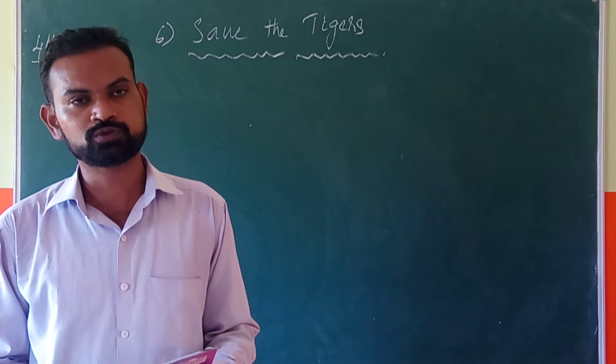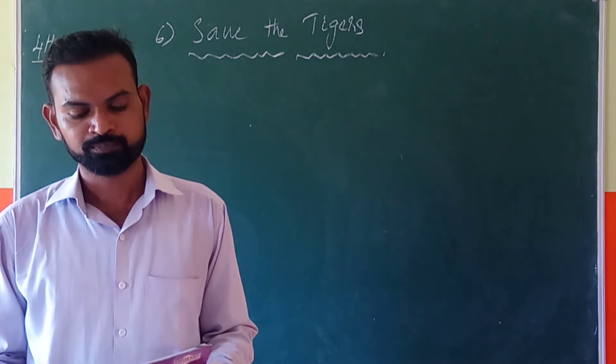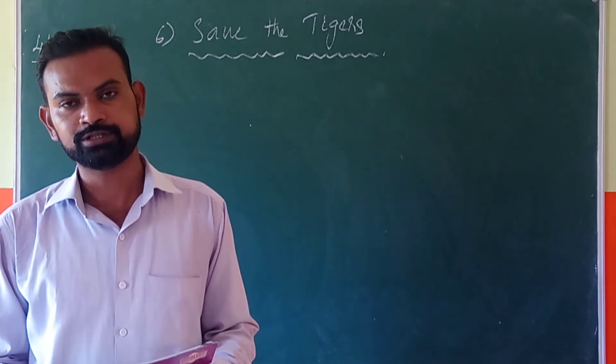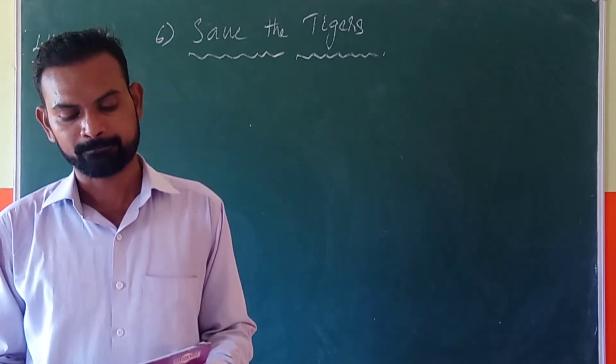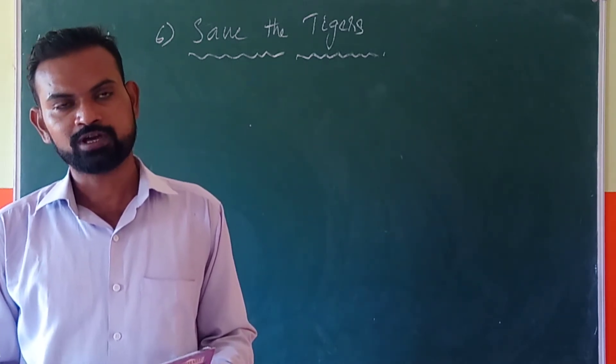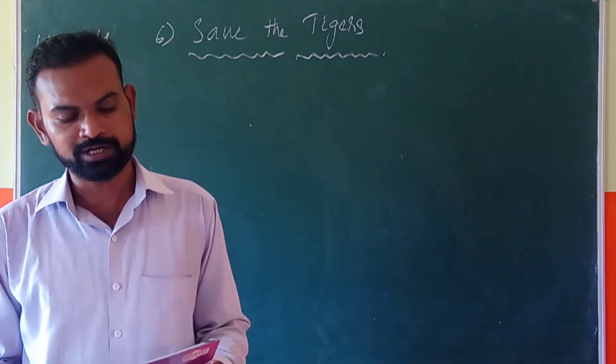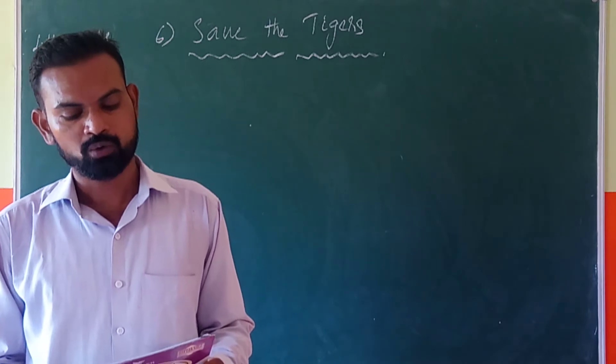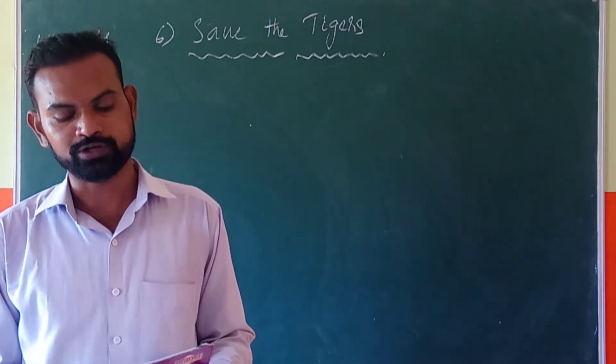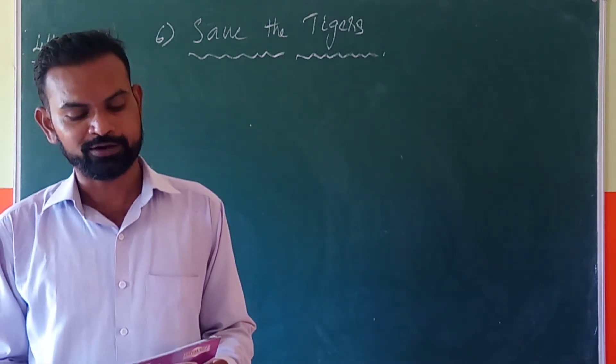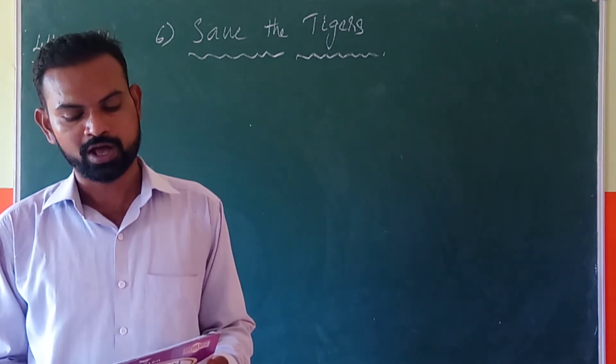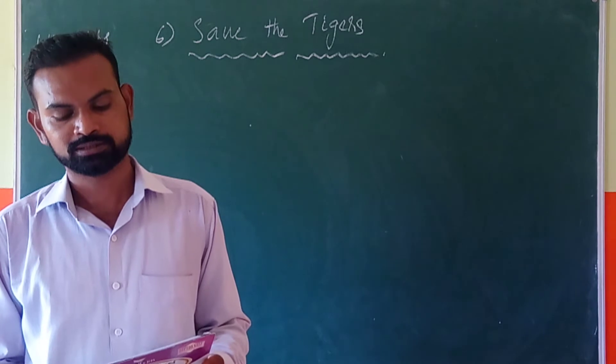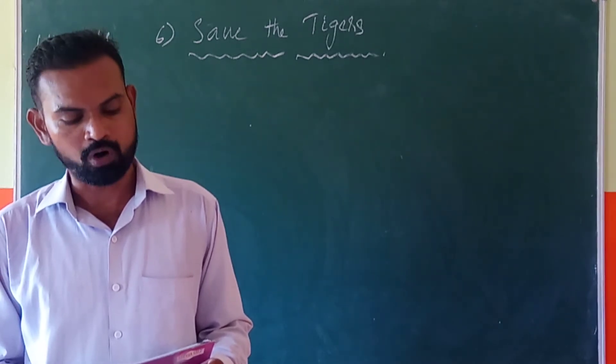Tigers do not eat fruits and vegetables. They like flesh of goat, deer, rabbits. They like the flesh of goat, deer, rabbits, etc. They kill an animal only when they are hungry. They never kill it for sport.